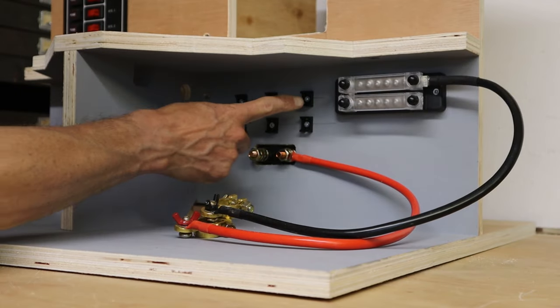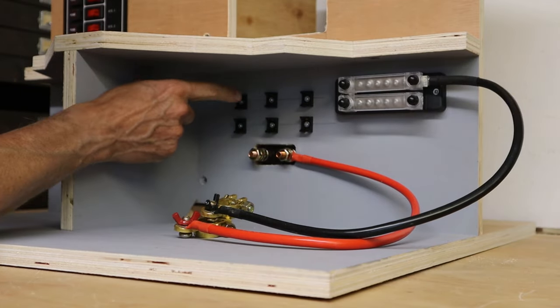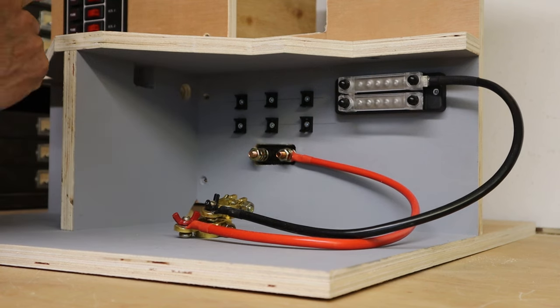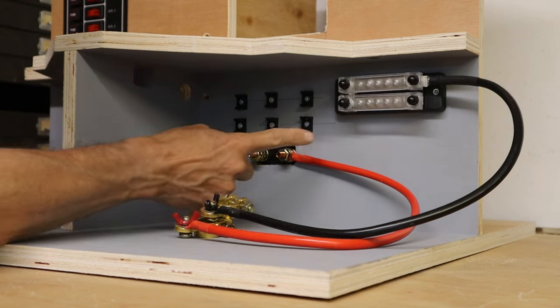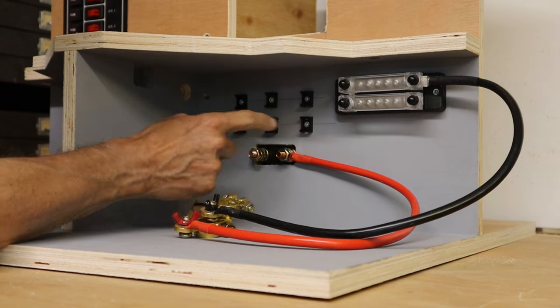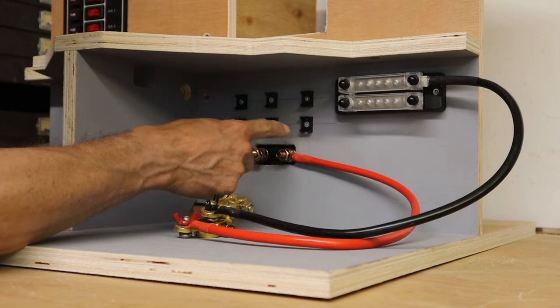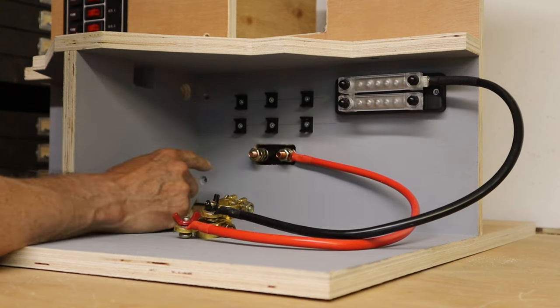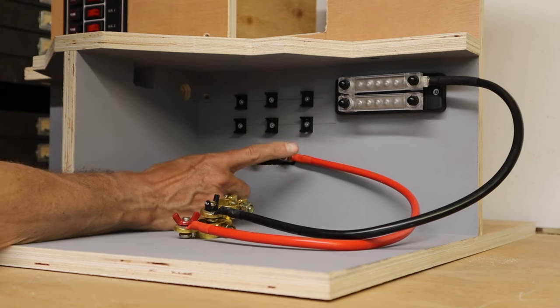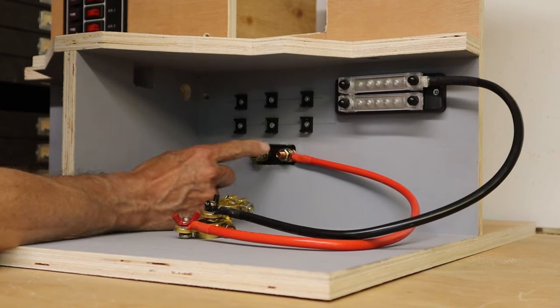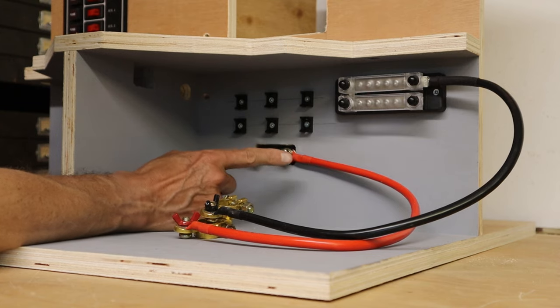I'm going to use the top run for the main feed wires which are going to go to the inputs of the switch panel, and I'm going to use this bottom run for all the individual return negative to the buzz bar. I've actually decided I'm going to move this main battery switch to the other terminal just to make the routing a little bit easier.